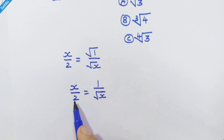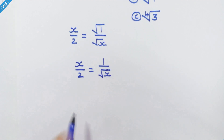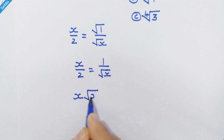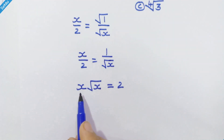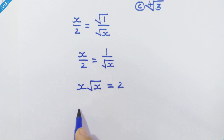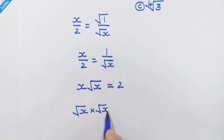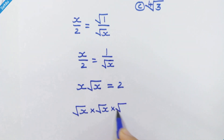In the next step we can cross multiply this. So x into square root of x, and 2 into 1. We have x into square root of x is equal to 2.